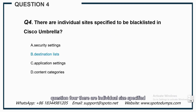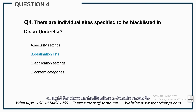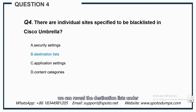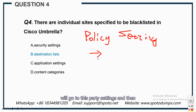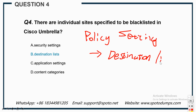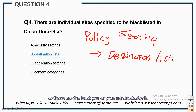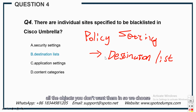Question four: There are individual sites specified to be blacklisted in Cisco Umbrella. When a domain needs to be blocked, we can navigate to the destination list under the policy settings. Those are lists that you or your administrator in your organization has created, and you can use them to blacklist all the objects you don't want. So we choose B, destination lists.